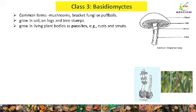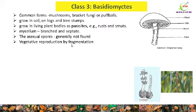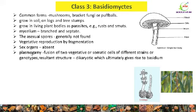Here you can see rust of wheat. In Basidiomycetes, the mycelium is branched and septate. Asexual spores are generally not found. Vegetative reproduction takes place by fragmentation — the mycelium is cut into small fragments, and each fragment later develops into fungal mycelium. In Basidiomycetes, sex organs are absent, but two important processes take place: plasmogamy and karyogamy. Plasmogamy is the fusion of two vegetative or somatic cells of different strains or genotypes, and the resultant structure is dikaryotic, which ultimately gives rise to the basidium.